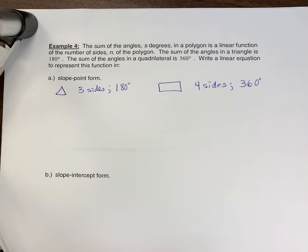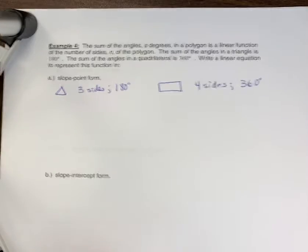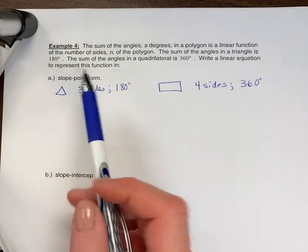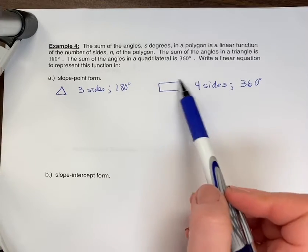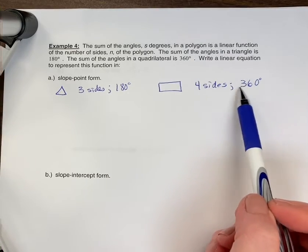Write a linear equation to represent this function. So in part a, we're going to put our answer in slope-point form. So the triangle has three sides and it's 180 degrees. A quadrilateral, meaning four sides, is 360.